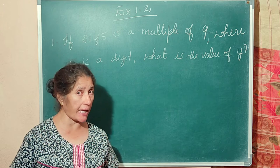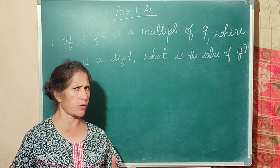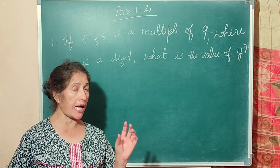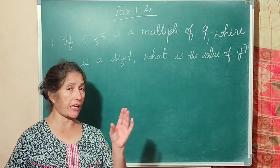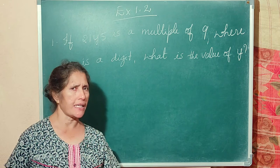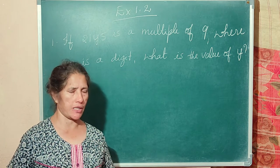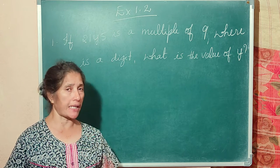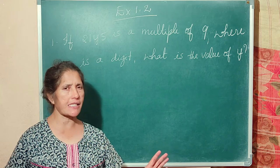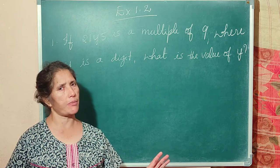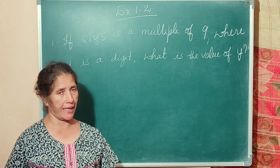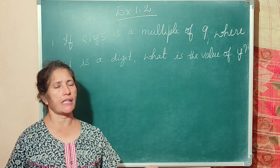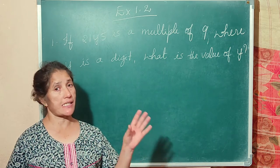The number is divisible by 8 — there is no test for divisibility of 7 — if the last three digits taken together as a number is divisible by 8. A number is divisible by 9 if you add all the digits and the sum is divisible by 9. The number is divisible by 10 if the last digit is 0.